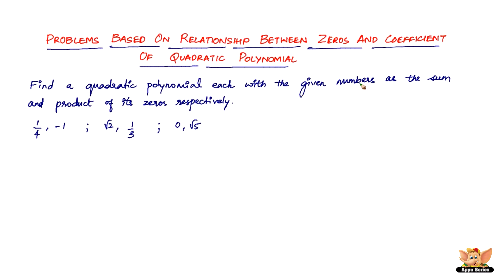So one-by-four is the sum of the zeros and minus one is the product of its zeros. Similarly, root two is the sum of the zeros and one-by-three is the product of the zeros for another equation we are supposed to find. We need to use these values and find a quadratic polynomial for each set.